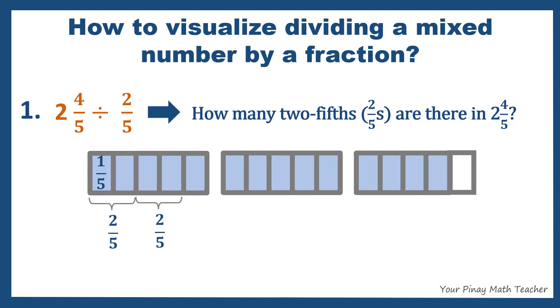1, 2, 3, 4, 5, 6, 7. So there are 7 two-fifths in 2 and 4 fifths. So 2 and 4 fifths divided by 2 fifths is equivalent to 7.